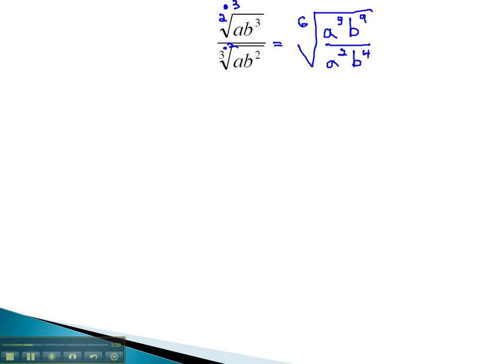We can now simplify this expression by subtracting exponents under this 6th root. Subtracting on the a's, 3 minus 2 is 1, and subtracting on the b's, 9 minus 4 is 5. Those are all positive and remain in the numerator, and so there is no denominator left in this problem that we need to worry about rationalizing.